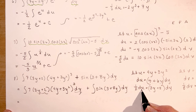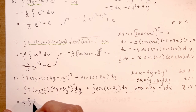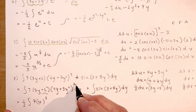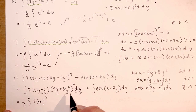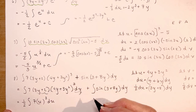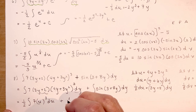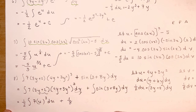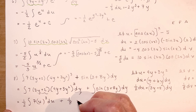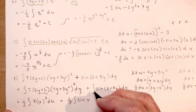Now I plug things back in. For the first integral I put 1/2 out front, times the integral of 7 times u to the power of 3 du — since u is 4y plus 3y squared and the dy was covered. For the second integral I have plus 1/8 times the integral of sine v dv.